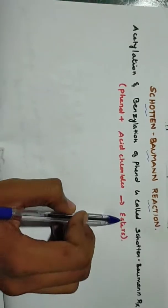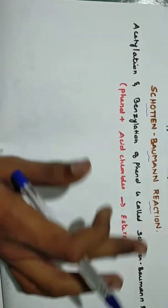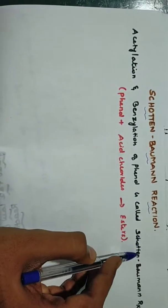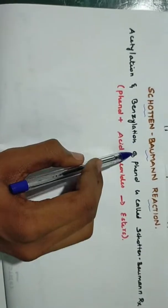So this is what we know about. Phenol plus acid chlorides give esters. Schotten-Baumann reaction is very easy. Acetylation and benzoylation of phenol is called Schotten-Baumann reaction. That means acetylation and benzoylation.